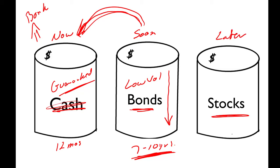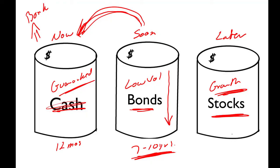After some time goes by, the money in your soon bucket will be down, and this is where the last bucket comes in — we call it the later bucket. The later bucket has growth investments, typically stocks. You need investments that can outpace inflation — that is critically important. The soon bucket protects you from the stock market, but it's the later bucket that protects you from rising inflation. The later bucket allows you to put more and more money into the soon bucket because of its growth opportunity. Now bucket covers 12 months with guaranteed investments. Soon bucket has low volatility and protects from the stock market. The later bucket protects you from getting stuck on a fixed income.